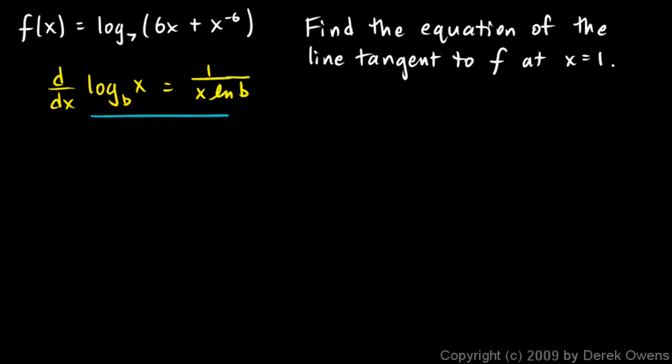This little concept here allows us to take the derivative of a base b log and in this case b, our base, is 7. So let's just apply this concept to this function. So I'm going to say the derivative of this thing, the derivative of log base 7 of 6x plus x to the negative 6 is going to be 1 over x times ln b right here.